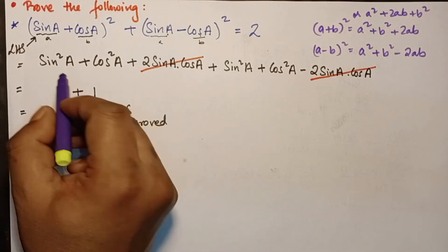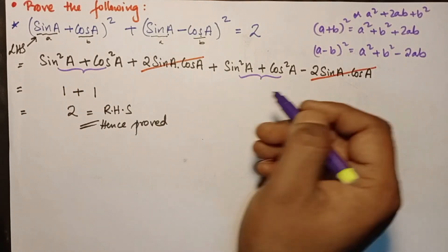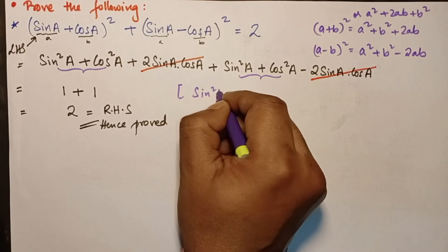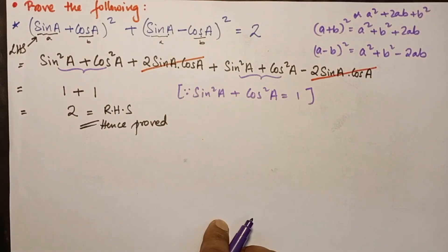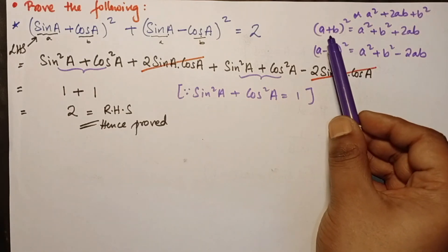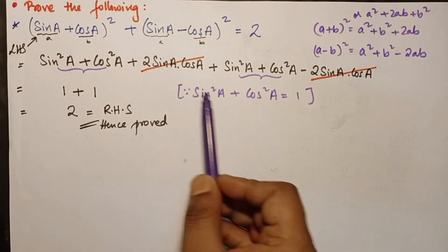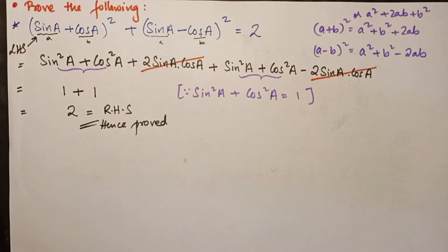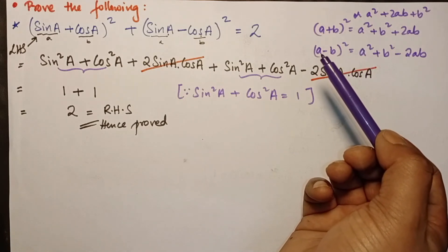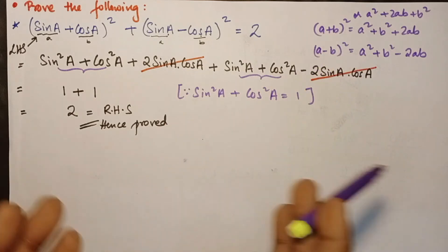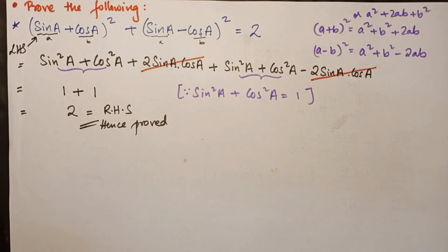Since sin²A + cos²A = 1, each bracket equals 1, so the total is 1 + 1 = 2, which equals the right-hand side. Hence proved. Mathematics requires knowing your formulas — this formula (a±b)² was taught in class 7, so always keep your earlier formulas fresh.